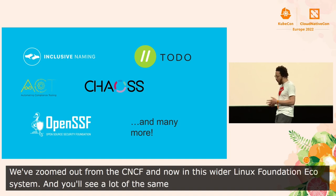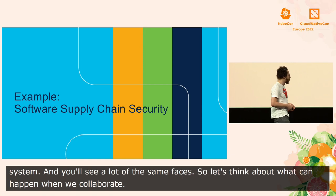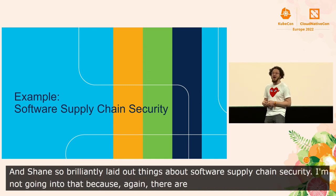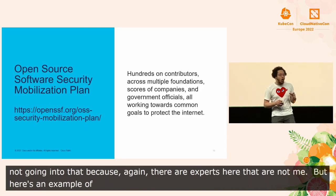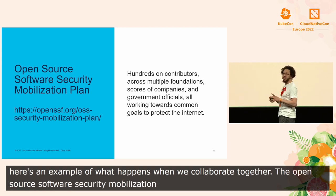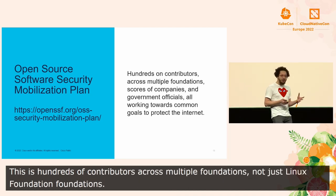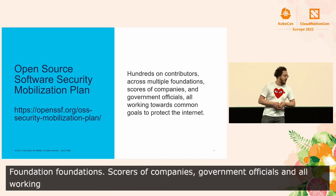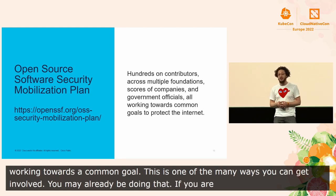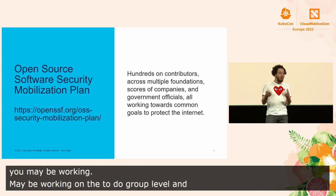Shane so brilliantly laid out some things about software supply chain security — I'm not going to go into that because there are experts here who are not me. But here's an example of what happens when we collaborate together: the Open Source Software Security Mobilization Plan was recently released by the OpenSSF. This is hundreds of contributors across multiple foundations, not just Linux Foundation foundations, scores of companies, government officials — all working towards a common goal of protecting the Internet. This is one of the many ways you can get involved. You may already be doing that if you're contributing to anything related to CycloneDX or SPDX.